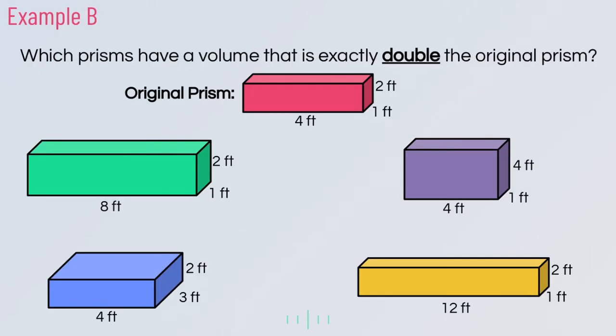In example B, it asks which prisms have a volume that is exactly double the original prism. Since we know that if one measurement is doubled then the volume is doubled, that's all we need to look for. Looking at the first prism, two and one are the same as the original, and eight is double four — since only one measurement is doubled, the volume will also be double.